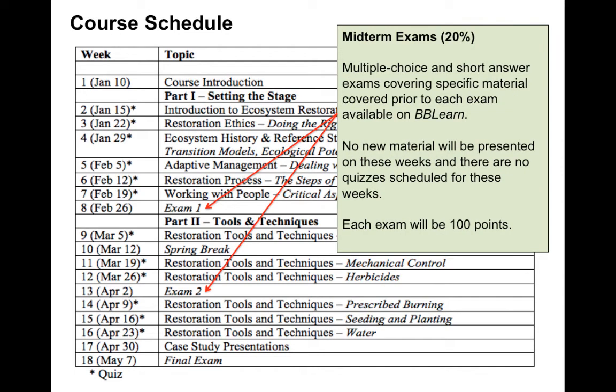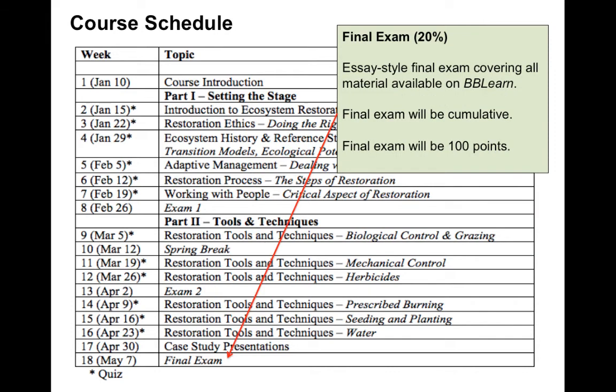We will also have two multiple choice and short answer exams that will cover the material in each section. These exams will only cover the material that was presented prior to each exam. These exams will be 100 points and will represent a total of 20% of your final grade, and will also be delivered and taken on BB Learn. We will also have a final exam that will be cumulative and will be more of a short answer essay-style exam, also delivered on BB Learn.